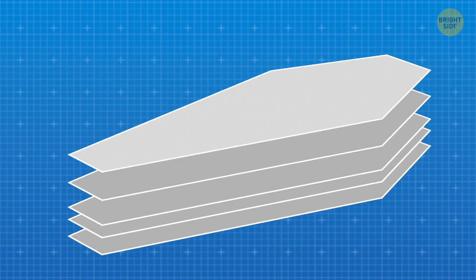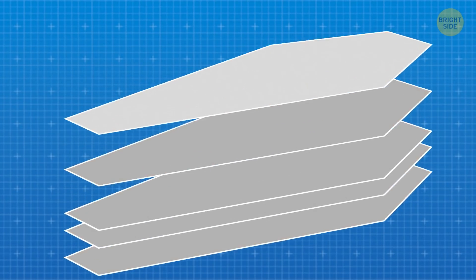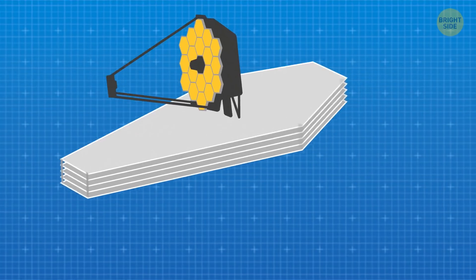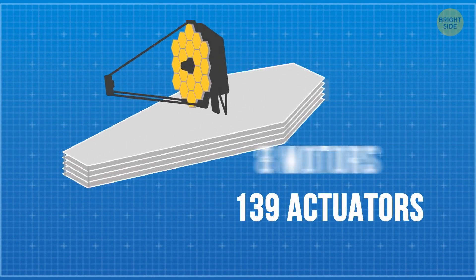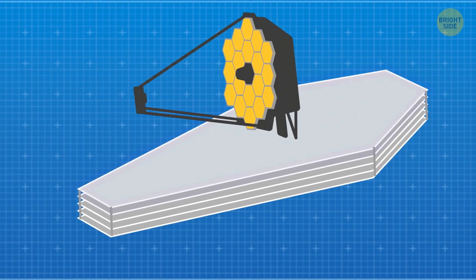Comprised of five individual layers of Kapton film, only a millimeter thick, each layer of the sunshield has to be remotely deployed individually, using a system of eight motors and 139 actuators, with thousands of parts.